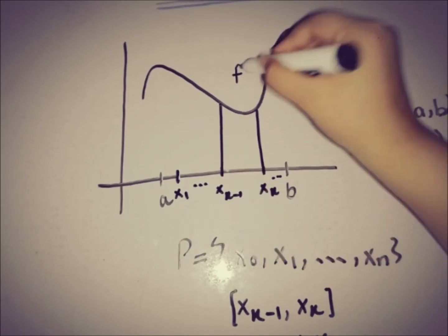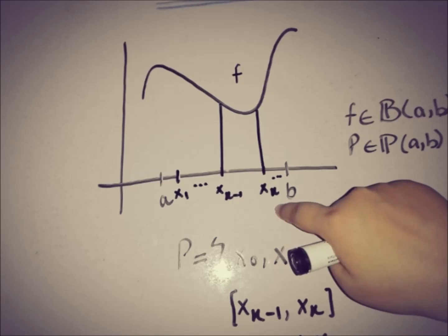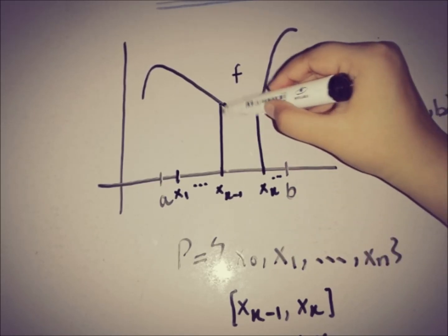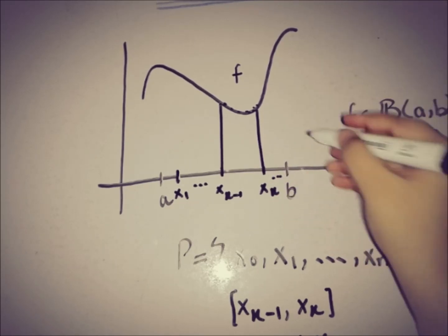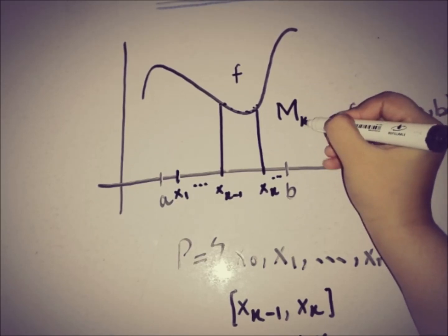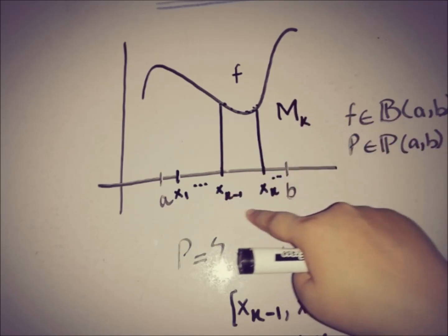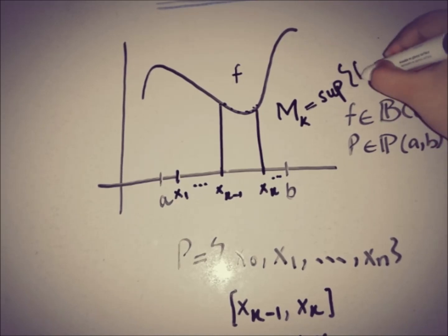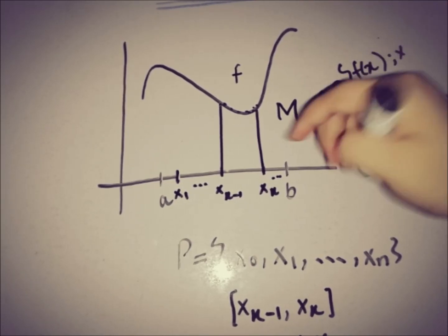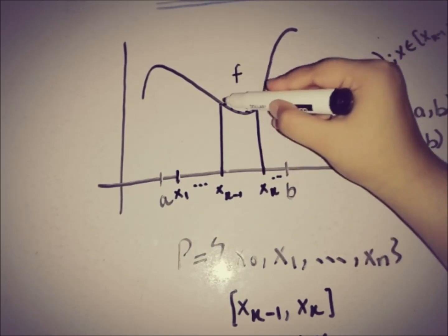The function has values between x_{k-1} and x_k in the k-th interval. We use capital M with subscript k, known as the supremum value on [x_{k-1}, x_k]. So M_k equals the supremum of f(x) where x is taken from the interval [x_{k-1}, x_k]. Most probably M_k is the highest value between x_{k-1} and x_k.